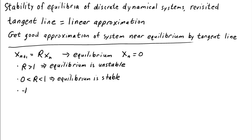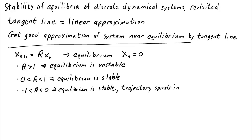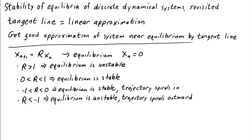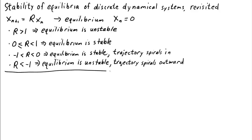What happens for negative values? If r is between minus 1 and 0, the equilibrium is stable again — the trajectory spirals in, getting closer and closer to 0. On the other hand, if r is less than negative 1, the equilibrium is unstable and the trajectory spirals outward. It's also fine if r equals 0: we reach the equilibrium x equals 0 in one step. These are our conclusions for a linear system.